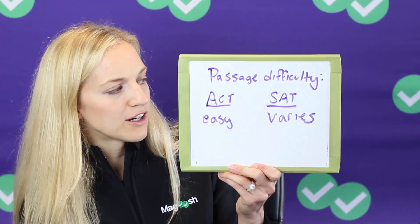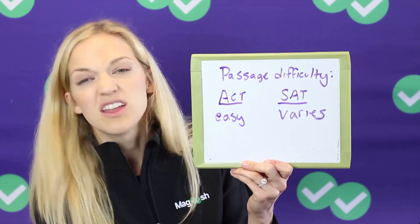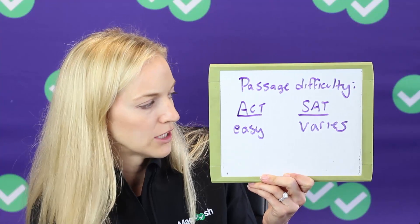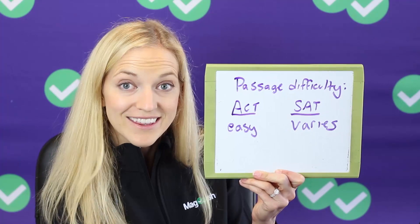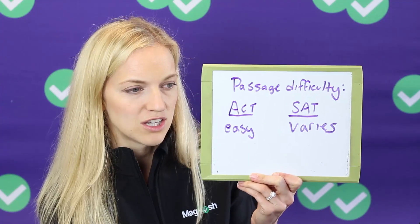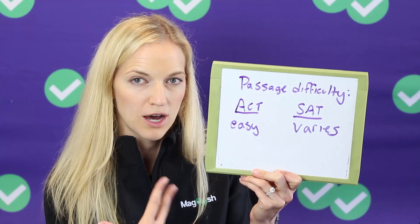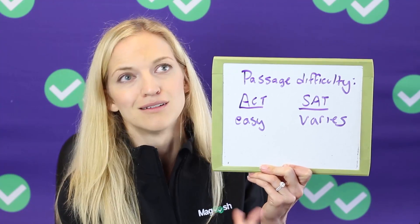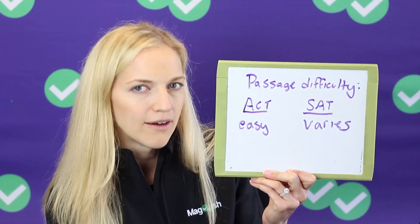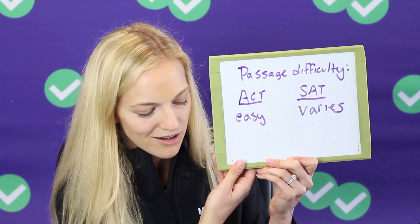As far as passage difficulty goes, on the ACT the English passages are pretty easy — maybe about a ninth grade reading level, not incredibly complex. The SAT likes to vary the difficulty of their passages, so on the writing section some passages are pretty easy and straightforward, while others come from a more complex text, making it a little bit harder to find grammar and rhetorical errors. But you'll also find some passages may be easier than what you normally see on the ACT.